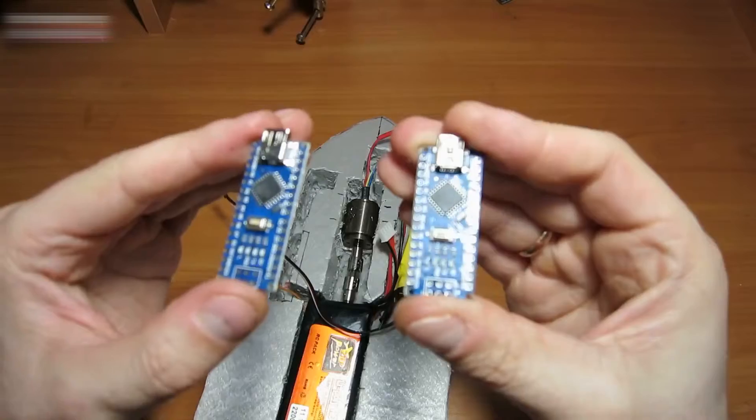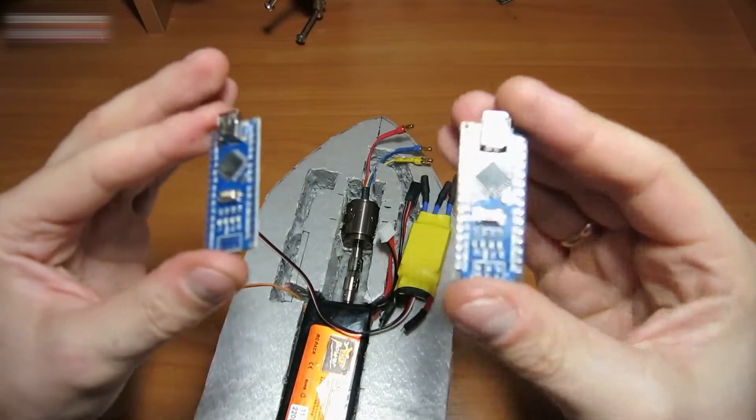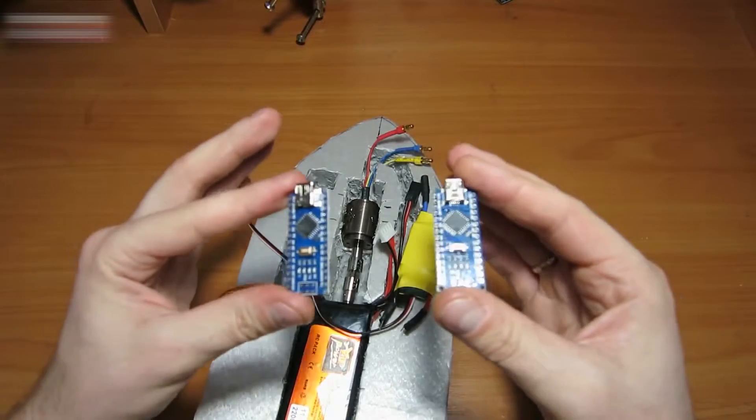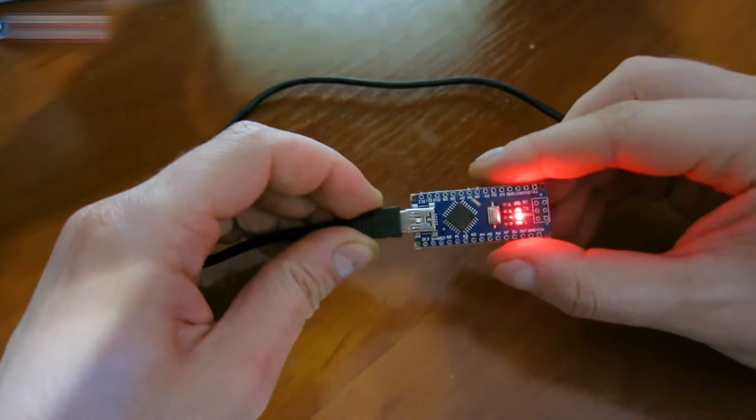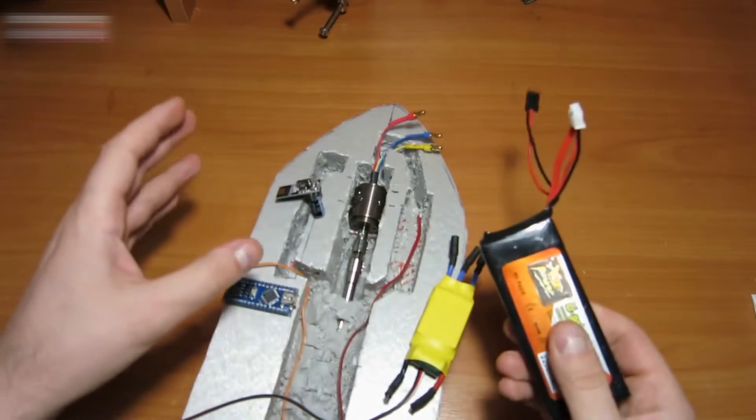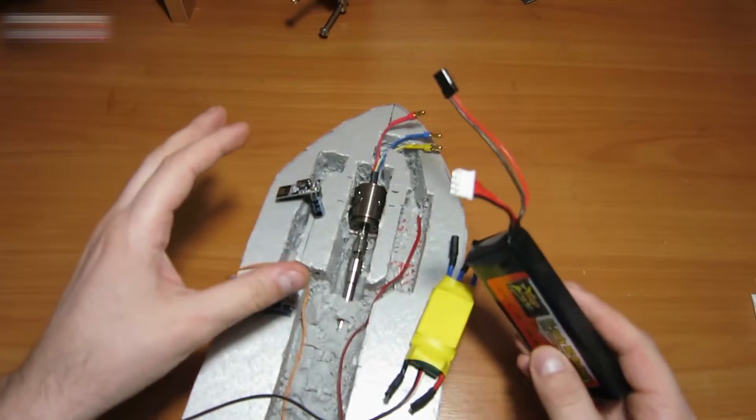Now, upload the receiver sketches into the Arduino. You can find the link on how to do it in the video description below. Now, solder everything according to this scheme.